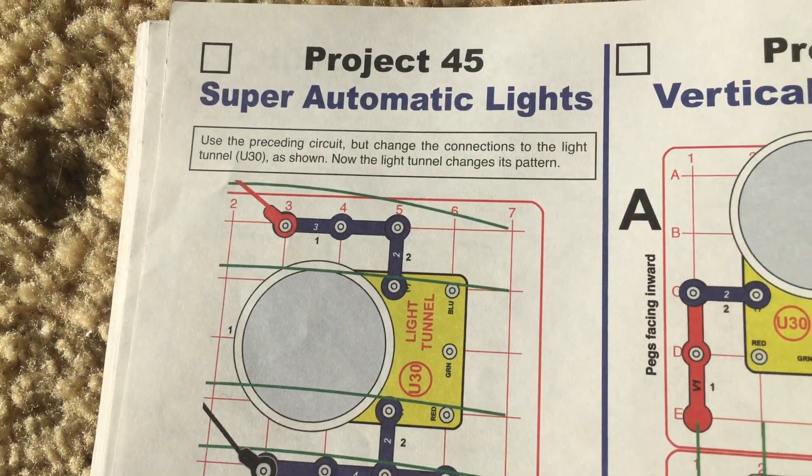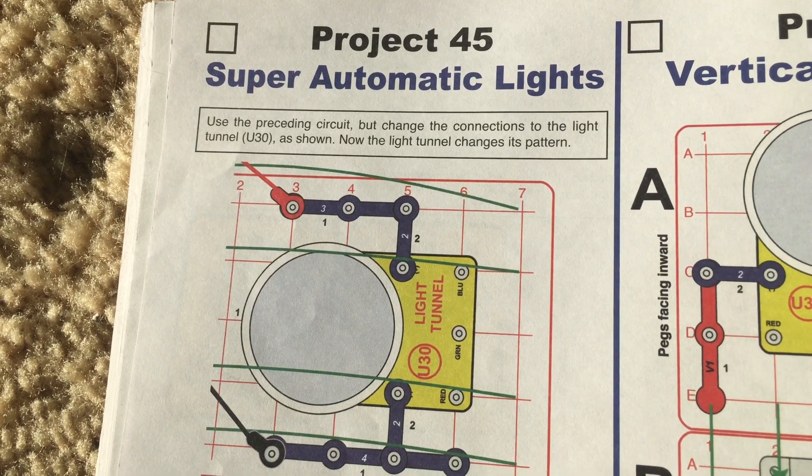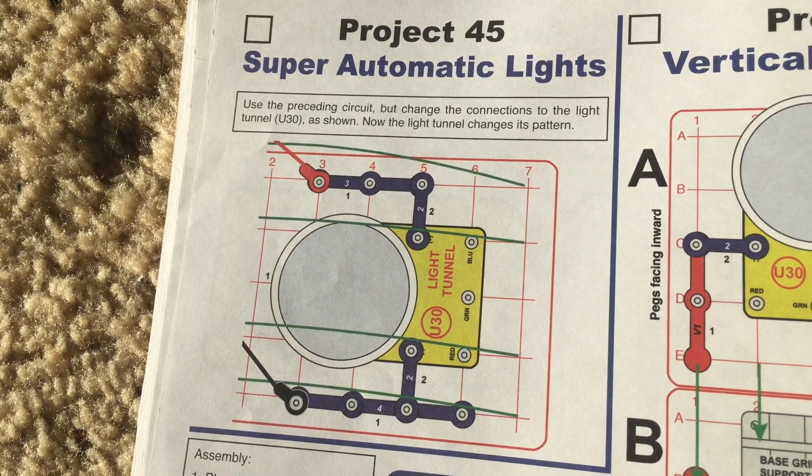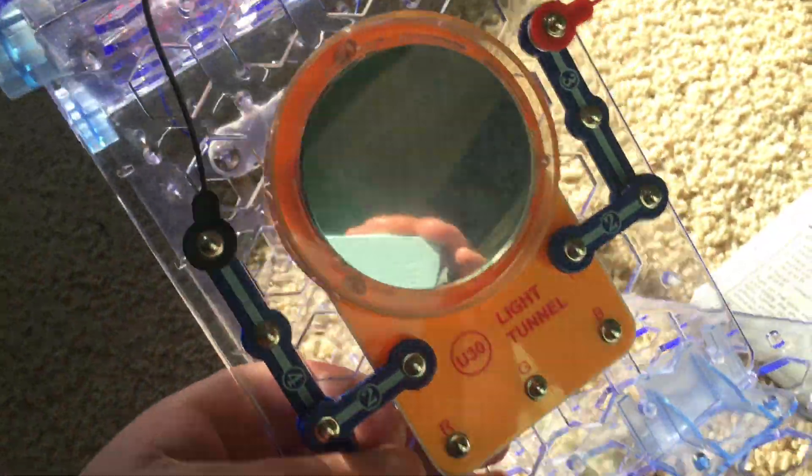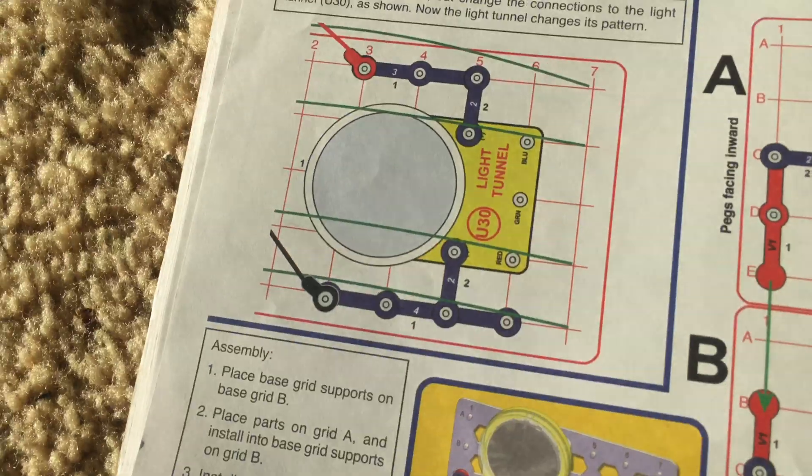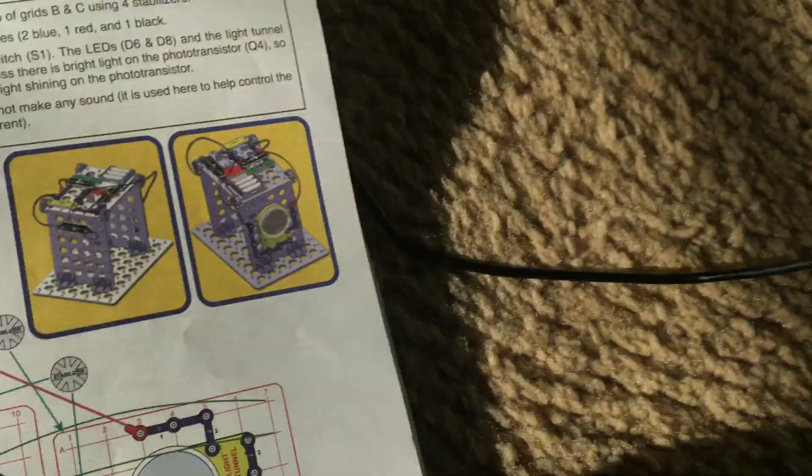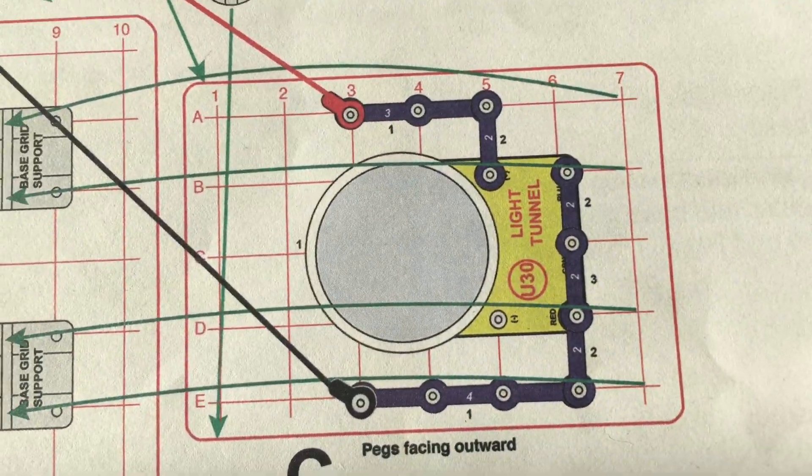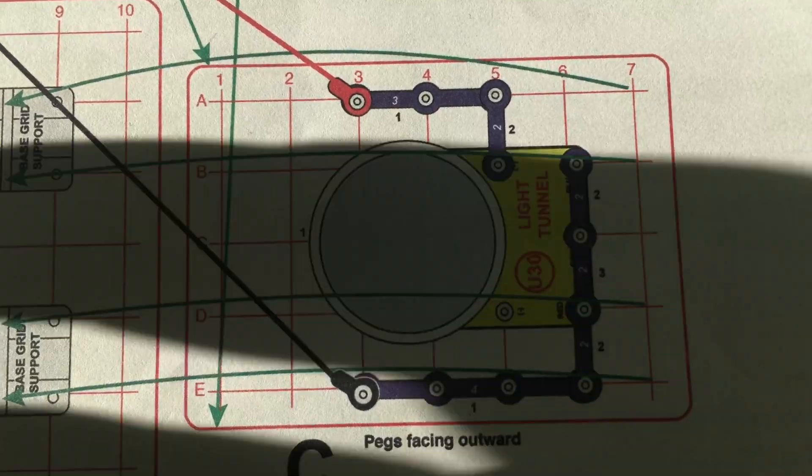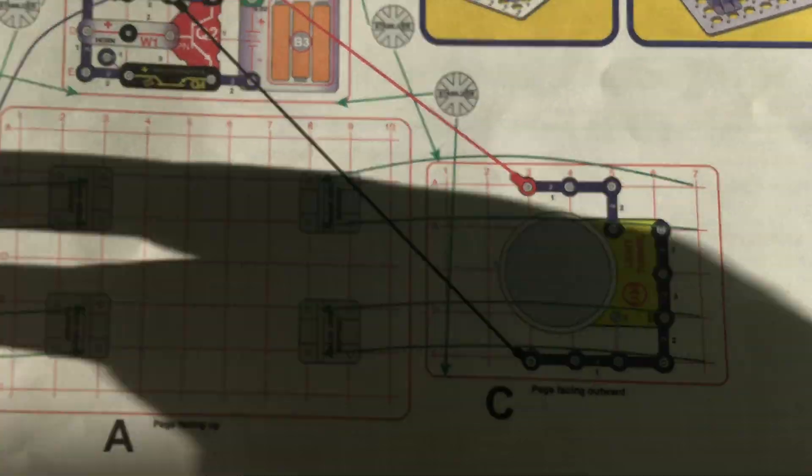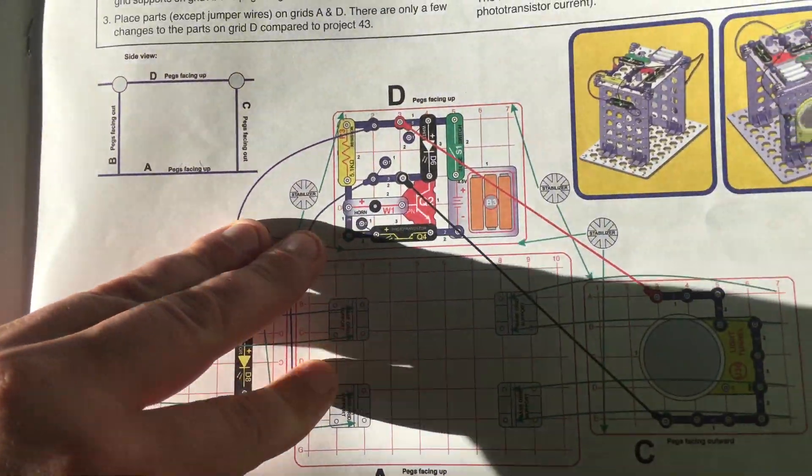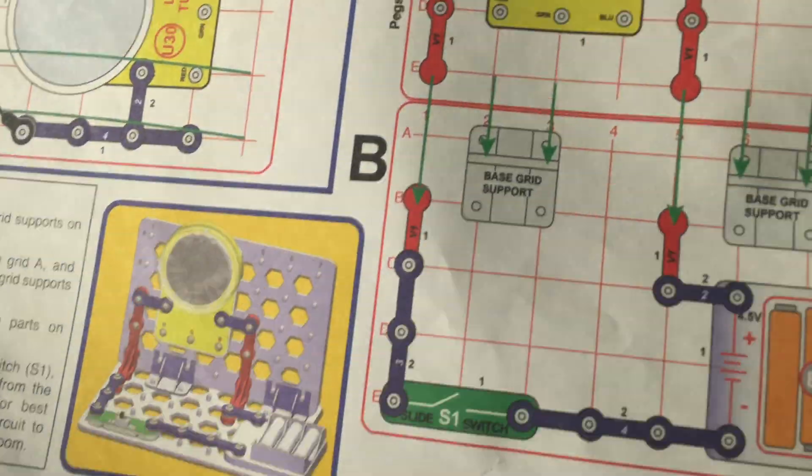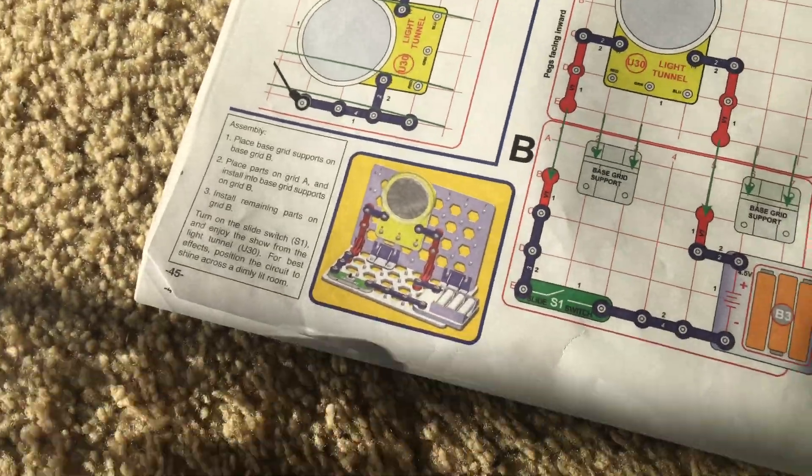Project 45, Super Automatic Lights. We'll use the same circuit as in Project 44, but modify the connections to the light tunnel, as shown in the diagram. Here's what the previous connections look like for the light tunnel in Project 44. And here's the general diagram. But, after we make those changes, we will turn on the slide switch.